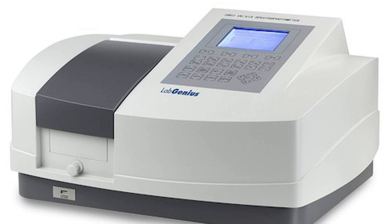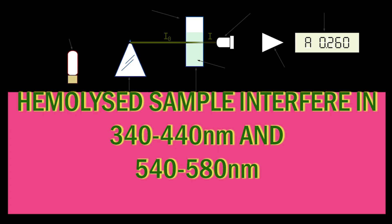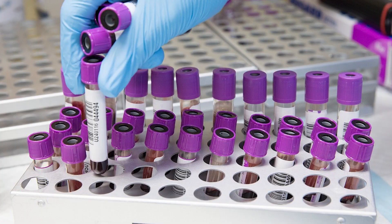Interference in absorbance: most labs use colorimetric methods for blood tests. Spectrophotometers are commonly used and detect the color change in test endpoints. Hemolysis present in hemolyzed serum or plasma changes the color, increasing the test reagent color and interfering with test results. Hemoglobin also absorbs light between 340 nm to 440 nm, and 540 nm to 580 nm — many lab result readings are taken in this region. Dilution of the sample also occurs when hemolysis occurs; for example, hemoglobin level decreases due to sample dilution.